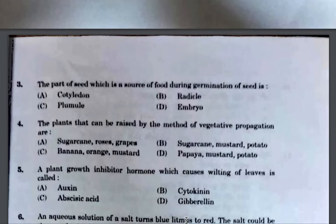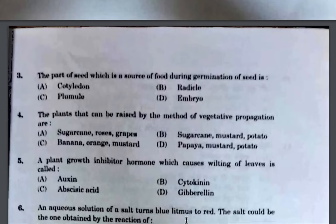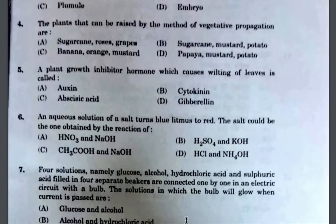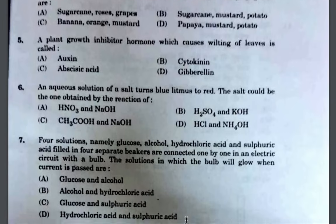Next, the plant growth inhibitor hormone which causes wilting of leaves is abscisic acid. Next, an aqueous solution of a substance turns blue litmus red — the answer is hydrochloric acid or ammonium hydroxide, and option D is the right answer.